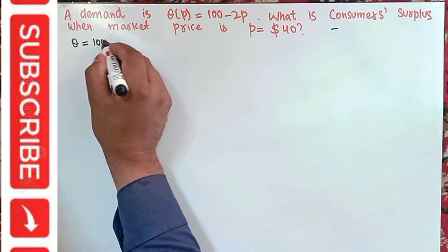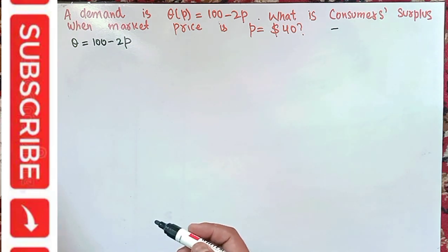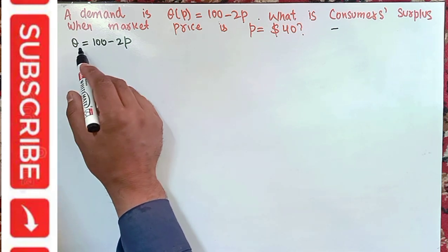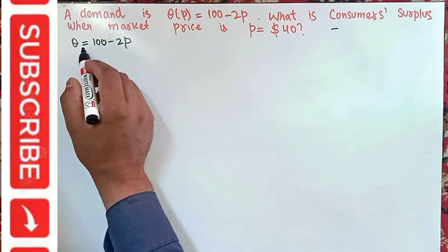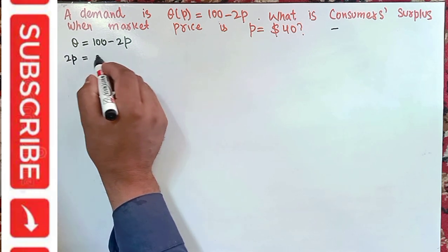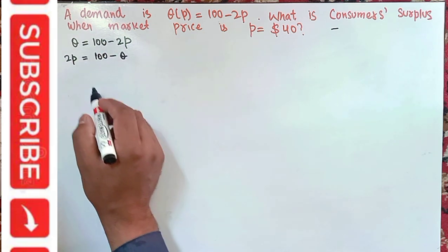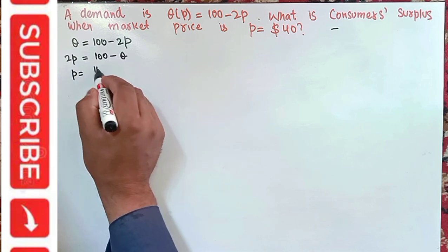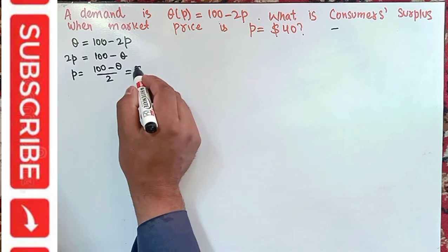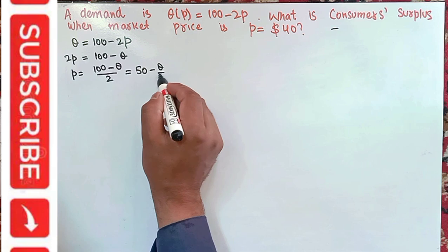First, we write the demand function q = 100 minus 2p, then we solve for p to find the inverse demand function. Transposing terms, we get 2p = 100 minus q, so p = (100 minus q) divided by 2, which simplifies to p = 50 minus q/2.